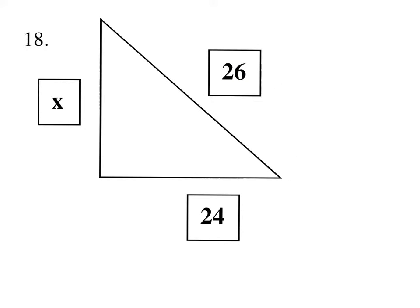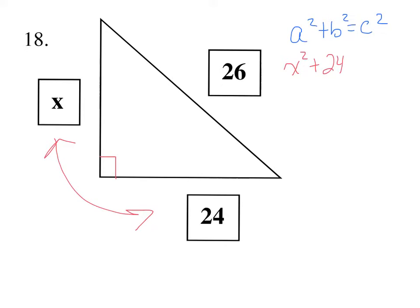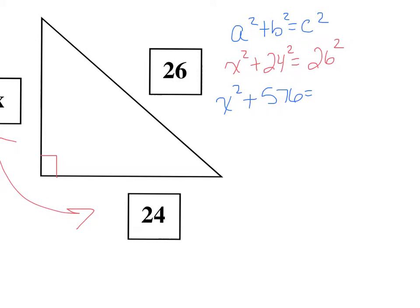This is Pythagorean Theorem again. We identify where the right angle is, and the two sides that make the right angle will be a and b. So we have x squared plus 24 squared equals 26 squared. Going off to the side: 24 times 24 is 576, and 26 times 26 is 676.